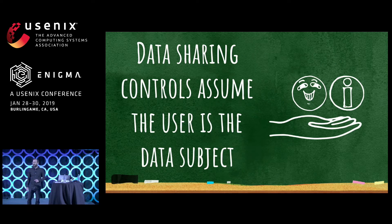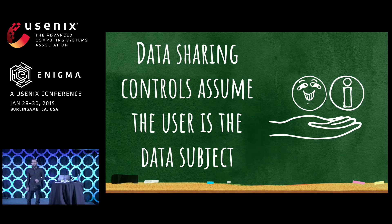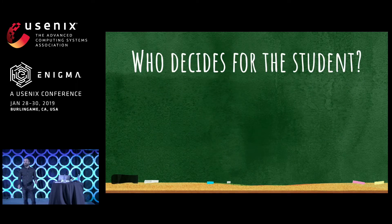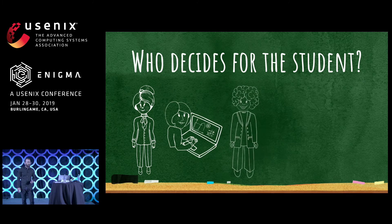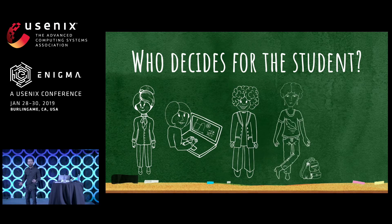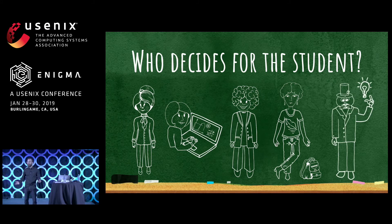Think about how you share data online — many interactions aren't designed to deal with surrogate decision-making. This is an ethical problem not only for students in schools, but also for adults medically incapable of making decisions. If you're a student, who should even get to decide where your data goes? Is it your teacher, your principal, the curriculum department, your parents, or software companies? Ultimately each of these people needs to agree, and showing permission prompts to students doesn't help that.